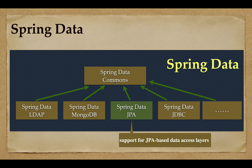If you look at the hierarchy, Spring Data Commons is the parent project and the other projects — like Spring Data LDAP, Spring Data MongoDB, Spring Data JPA, Spring Data JDBC — these modules basically extend Spring Data Commons. Spring Data Commons contains all the common interfaces and classes, and the other modules extend those interfaces.